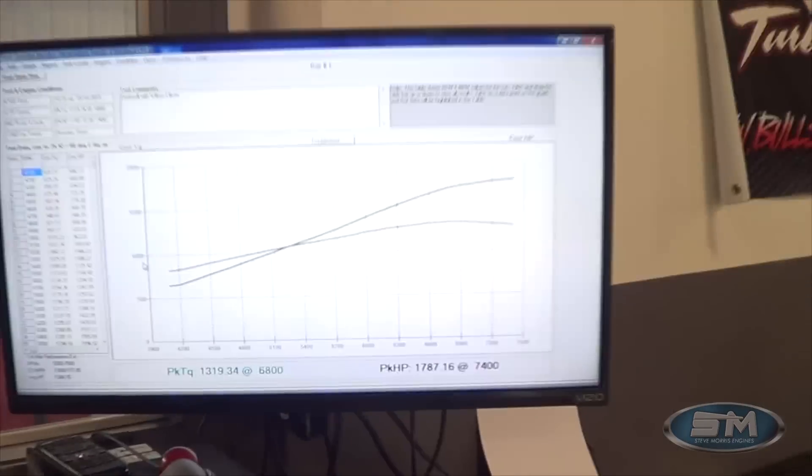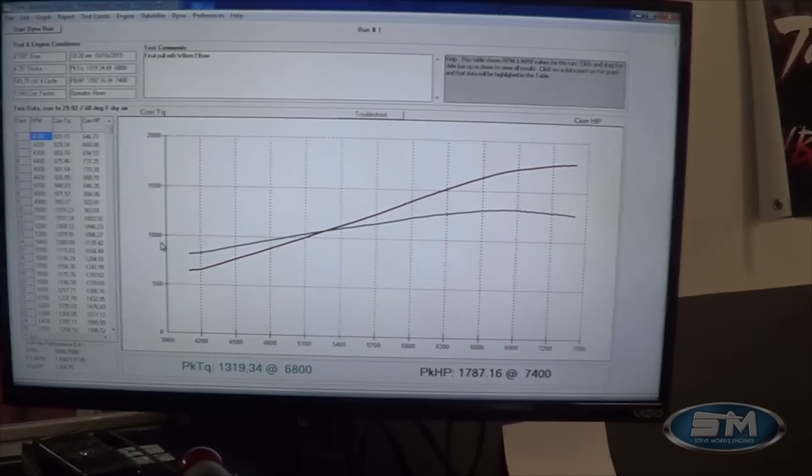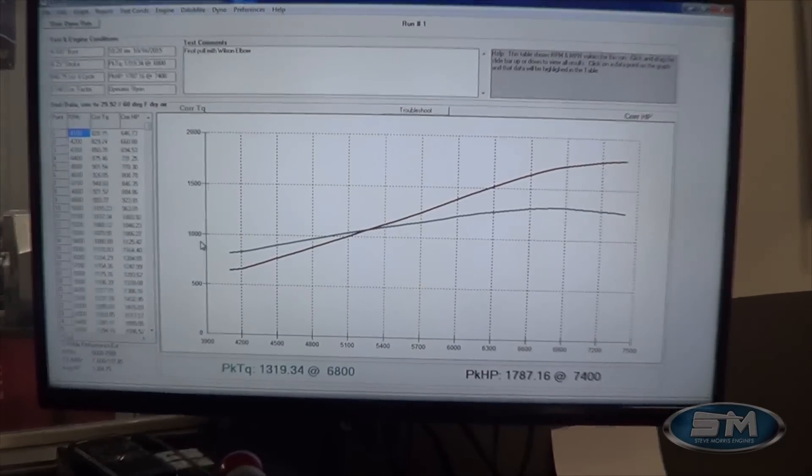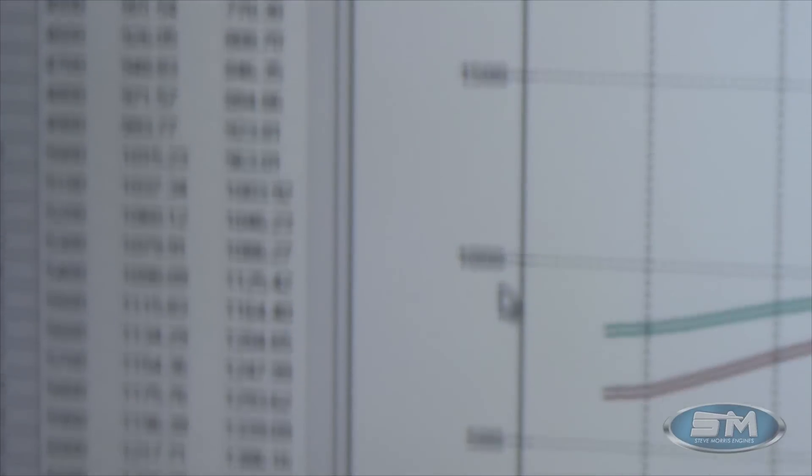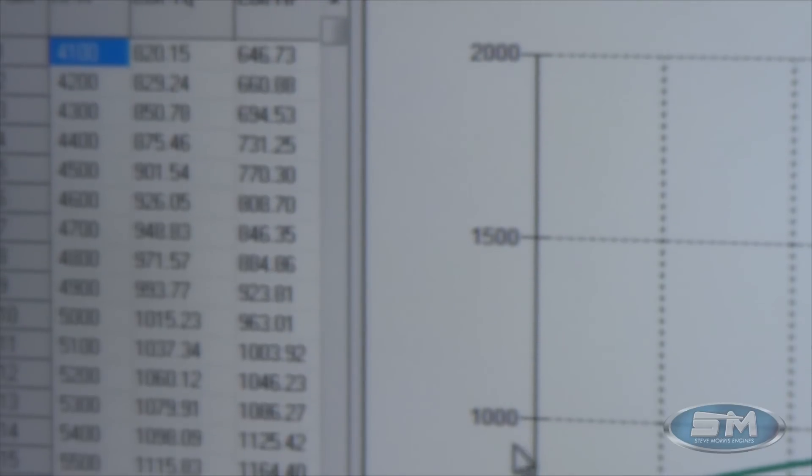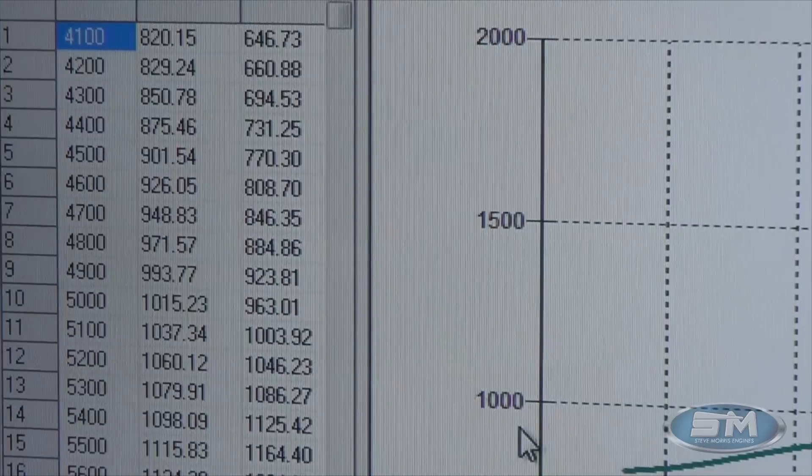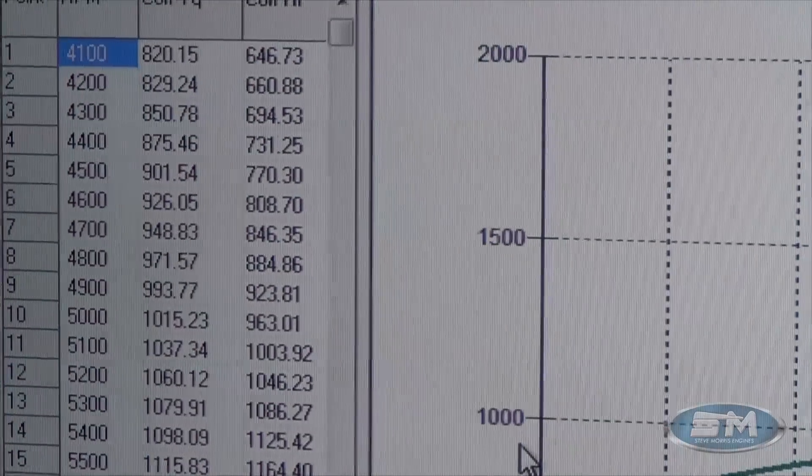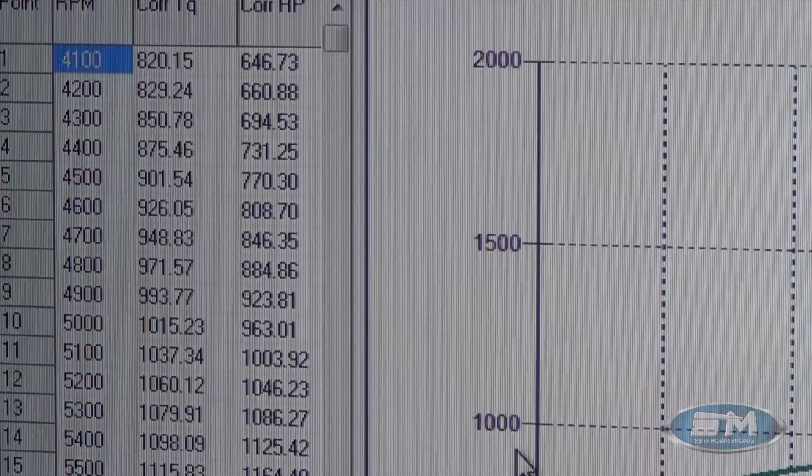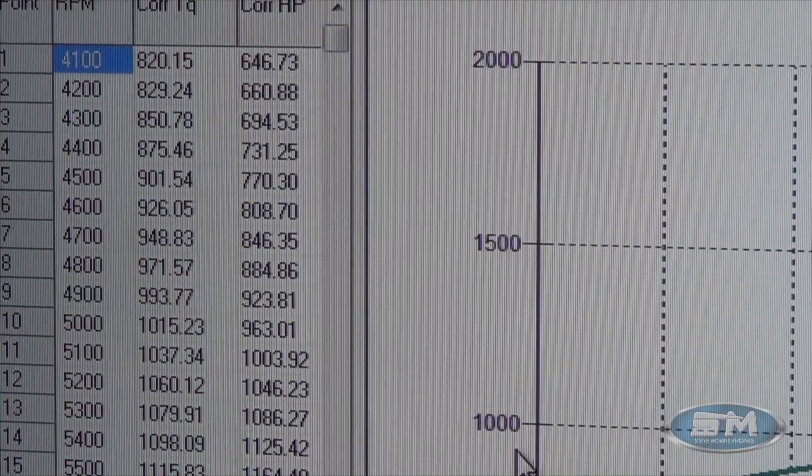Alright, let's take a look at the numbers. Start up at the top here. You can see we have 820 foot-pounds of torque and 646 horsepower at 4,100 RPM where we started the pull.